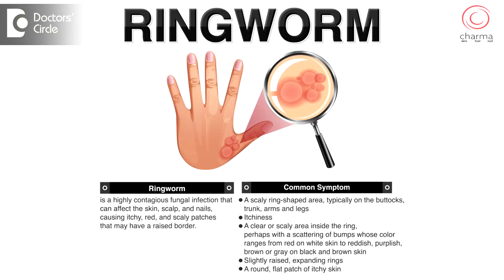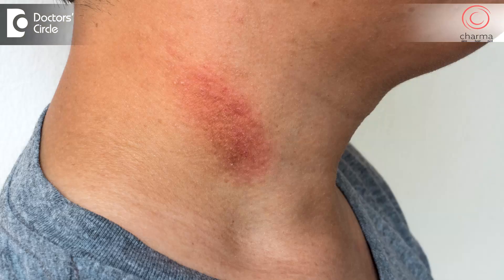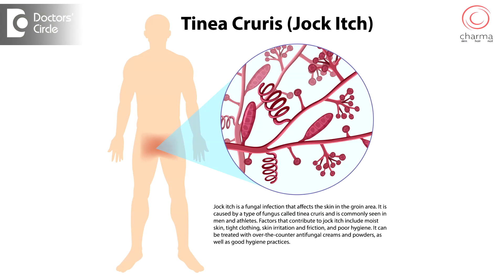This kind of Tinea infection is also called ringworm. Earlier it was thought to be due to worms, and it used to leave a round ring-like patch on the body. In Hindi they say Dad, in Kannada they say Kajji. If it occurs in the groin area — the commonest area — it's called dobi itch or jock itch.